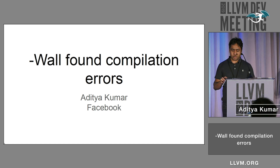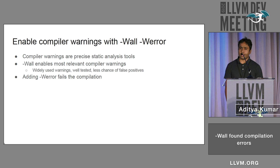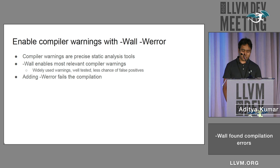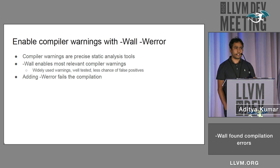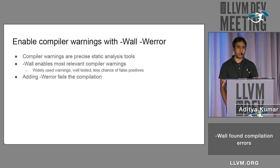As a step one to improve software quality, I thought enabling compiler warnings would be a good idea. Compiler warnings are very precise — or almost precise — static analysis tools, so that is a very good way to find bugs. I'll be sharing some of the interesting ones and some of the scary ones.